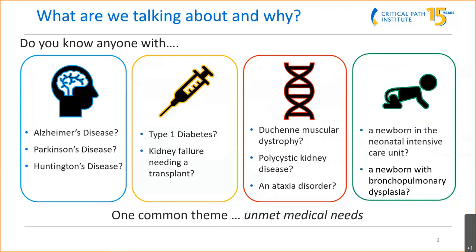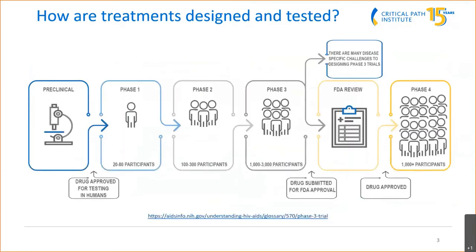There are not very good treatments out there for these diseases and disorders, so they represent challenges in drug development for how to actually make treatments. To understand how the methods I'm going to discuss can help advance treatments, we first need to understand how treatments are actually designed and tested. It occurs in different phases and is quite a long and expensive process. There's a preclinical phase where drugs are developed in a lab, and once approved by regulatory agencies like FDA or EMA, they go into testing in humans. Phase 1 focuses on making sure the drug is actually safe and effective.